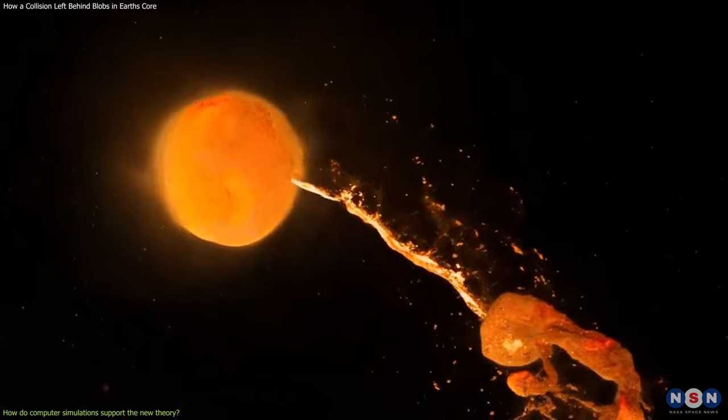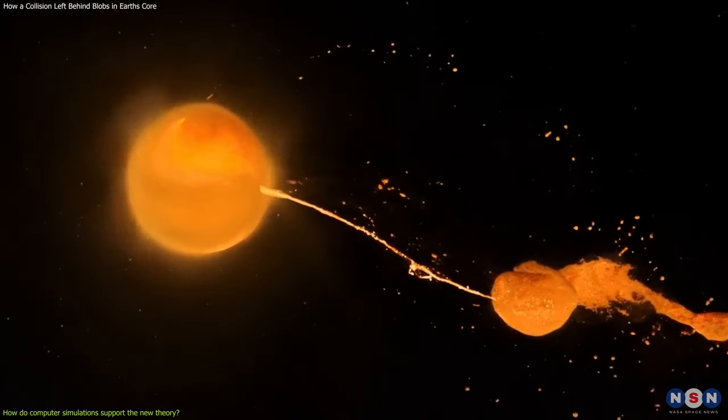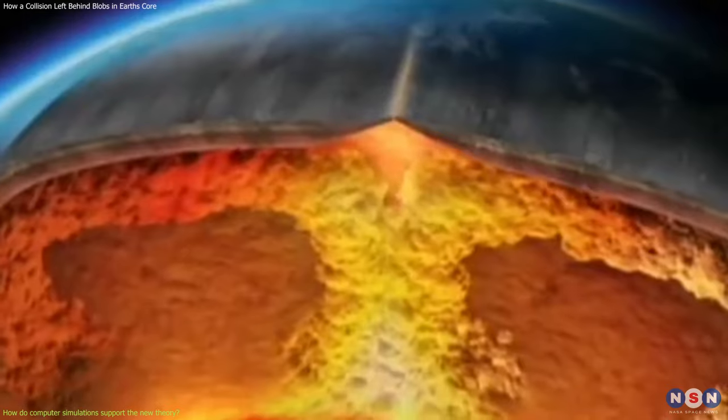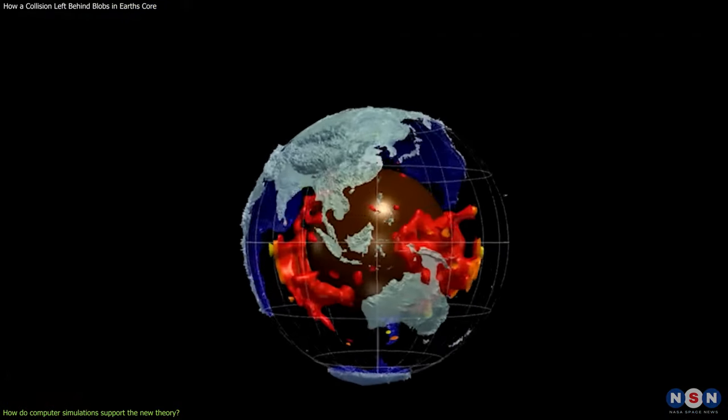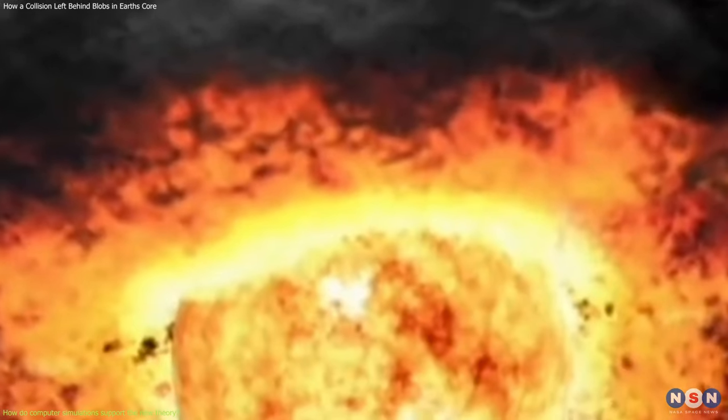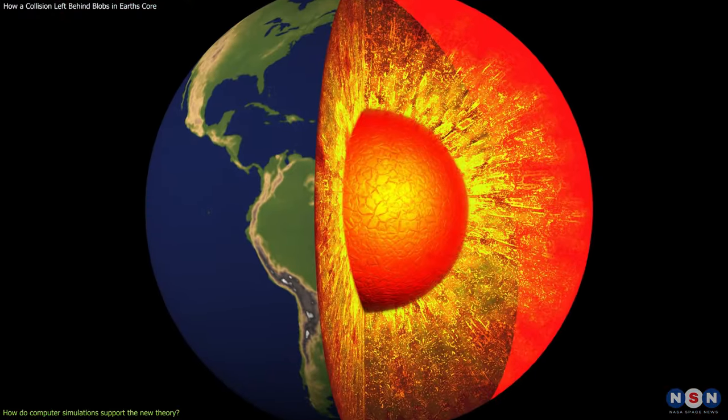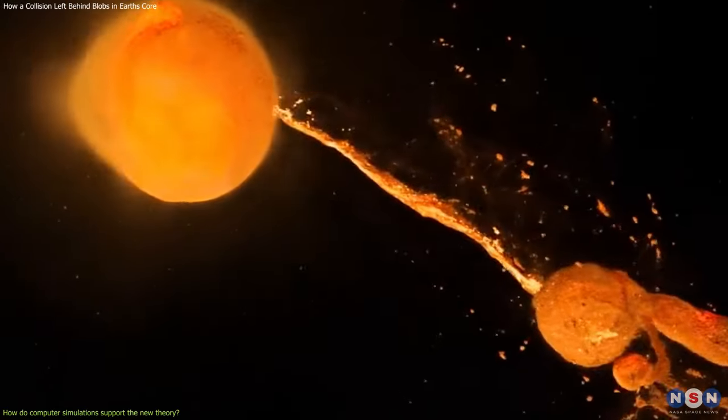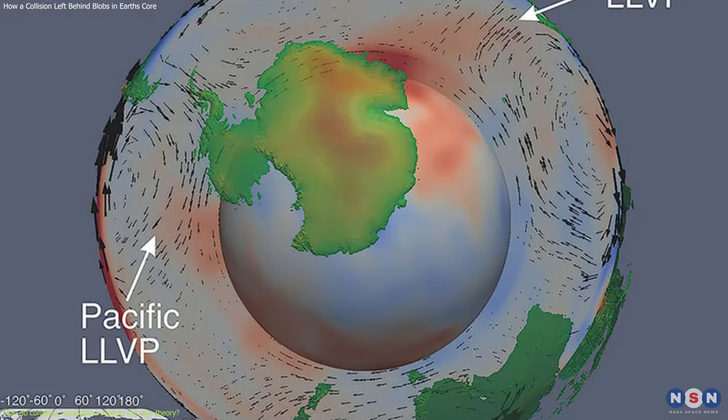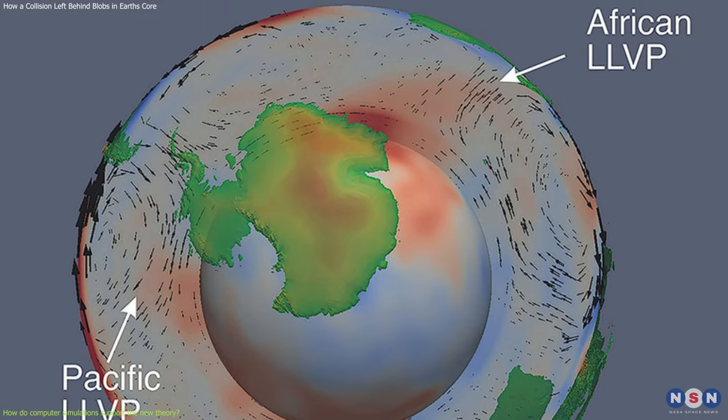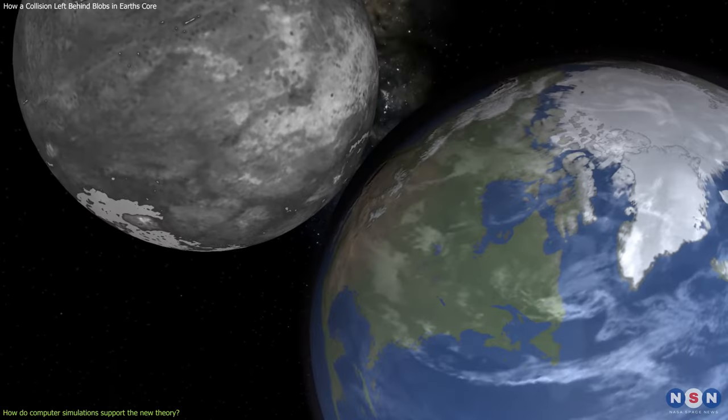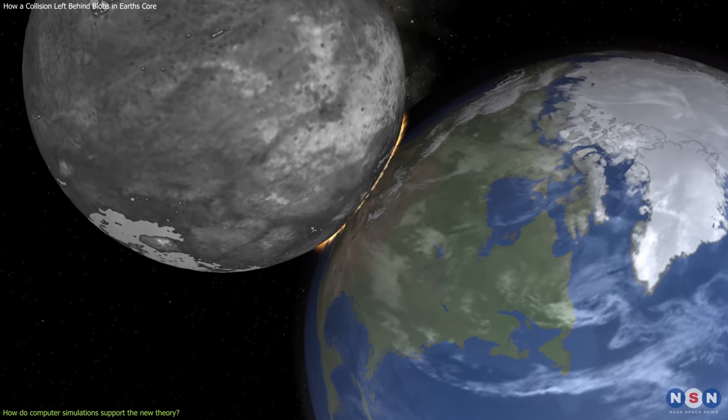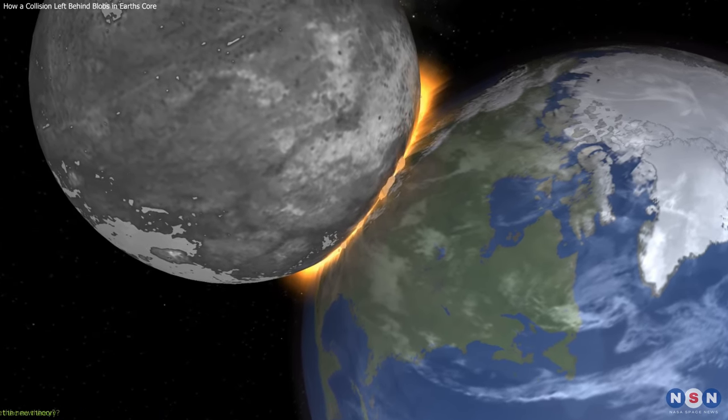However, the simulations are not perfect, and they have some limitations and uncertainties. For example, they do not include the effects of mantle convection, the process that transfers heat and material within the mantle, which could affect the distribution and evolution of the LLVPs. They also do not include the effects of the core-mantle boundary, the interface between the core and the mantle, which could affect the interaction and stability of the LLVPs. The simulations also have a limited resolution, and they cannot capture the fine details and variations of the LLVPs. They also have a range of possible outcomes, and they cannot pinpoint the exact scenario that happened in reality. Therefore, the simulations are not conclusive, and they need to be validated and refined with more data and experiments.